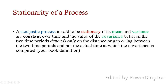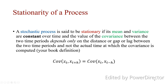A stochastic process is said to be stationary if its mean and variance are constant over time, and the value of the covariance between two periods depends only on the distance or lag between those two periods, not the actual time at which the covariance is computed. When we say a process x_t is covariance stationary, the covariance of x_t and x_{t+h} equals the covariance of x_t and x_{t-h}, because the distance in absolute value between both pairs is h.